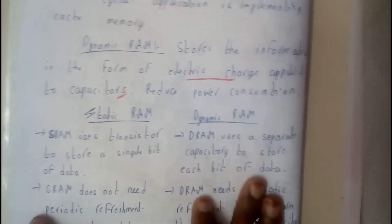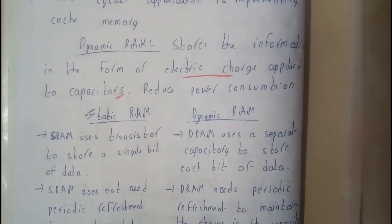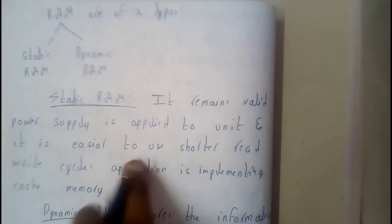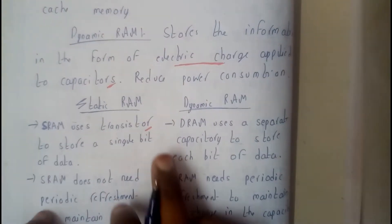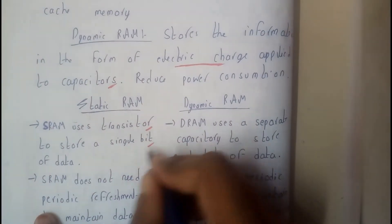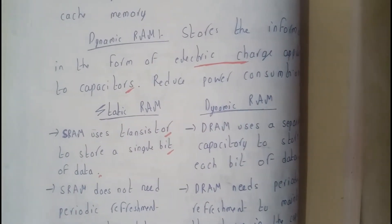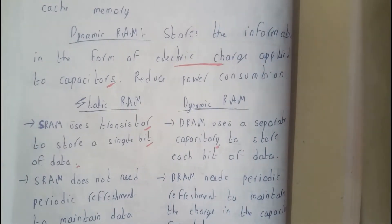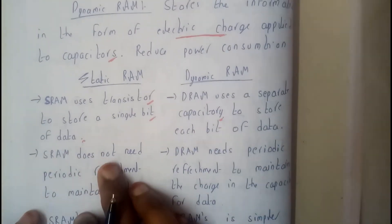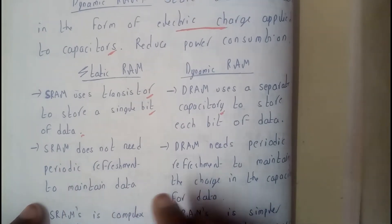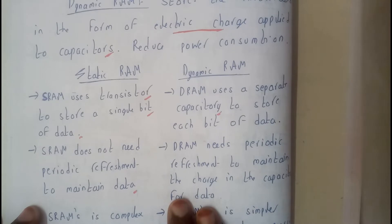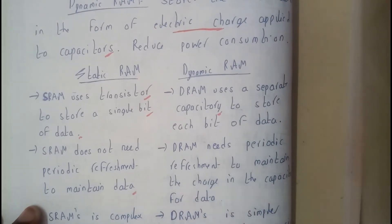In Static RAM, data is stored in transistors to store single bytes of data. Dynamic RAM, popularly called DRAM, uses separate capacitors to store each bit of data. Static RAM does not need periodic refreshment as it takes only fewer clock cycles, whereas DRAM needs refreshment to maintain the charge in the capacitors since the data can vary at any moment.